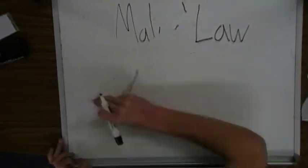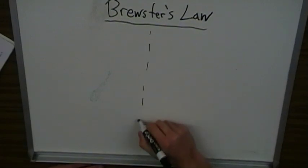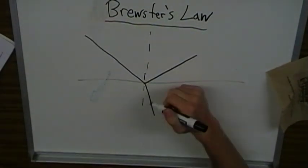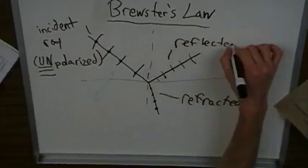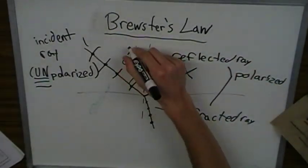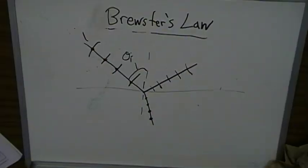Another law is Brewster's law, which has to do with refraction and reflection. When light is incident on a plane which can both refract and reflect light, the light which is reflected becomes polarized. And the light which is refracted becomes slightly polarized, but not completely.